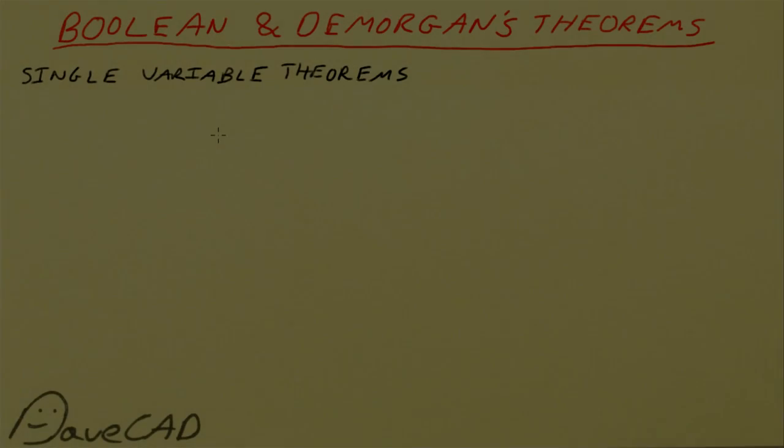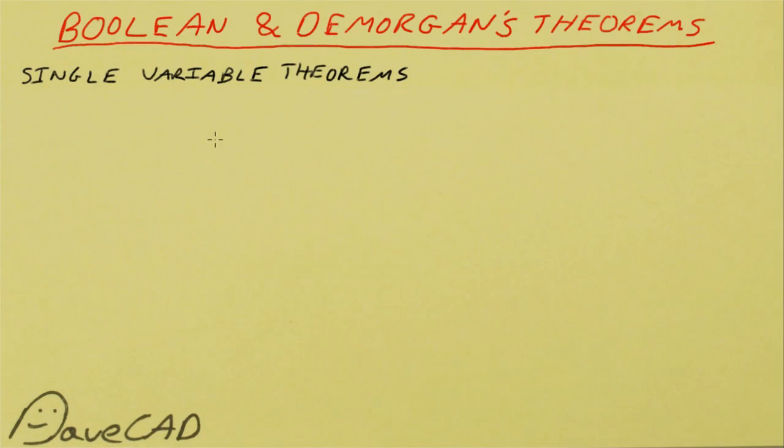Hi, in a previous video we took a look at basic digital logic gates, truth tables and basic Boolean algebra. Now it's time to move on to theorems, more specifically Boolean and De Morgan's theorems which allow us to do circuit or digital logic simplification.